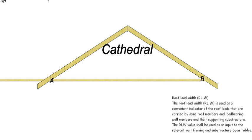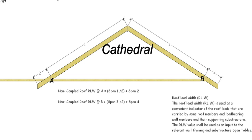Now we're going to have a look at the cathedral or a non-coupled roof. So in this case, for again starting at A, we're going to do span 1 divided by 2 plus span 2 will give us the RLW at A. And if we do B it's span 3 divided by 2 plus span 4. Remember this is for a non-coupled roof.